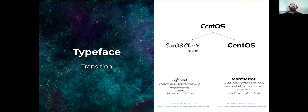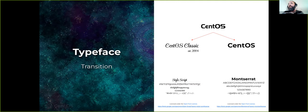About the typeface transition: on the top we have the type we were using so far. On the left side is a variant — a classic version — so the logo we have still remains active somehow. We are using Montserrat for the official typeface and a style script for the classic version.